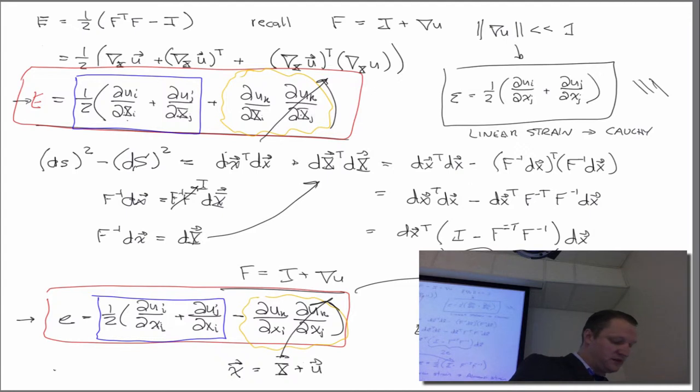Well, if the displacements are small enough, then little x and big X are approximately the same. They're approximately equal to one another. And that's how we get this, you know, how both equations reduce to the small strain equation in the limit.